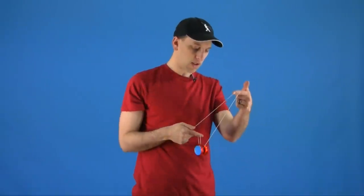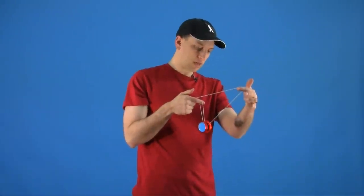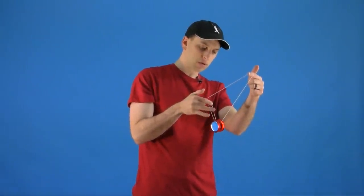To begin you want to mount your one and a half mount, your split bottom mount, and what you will see is that in front of the yoyo there is a single string and on the back side of the yoyo there is this double string right here.